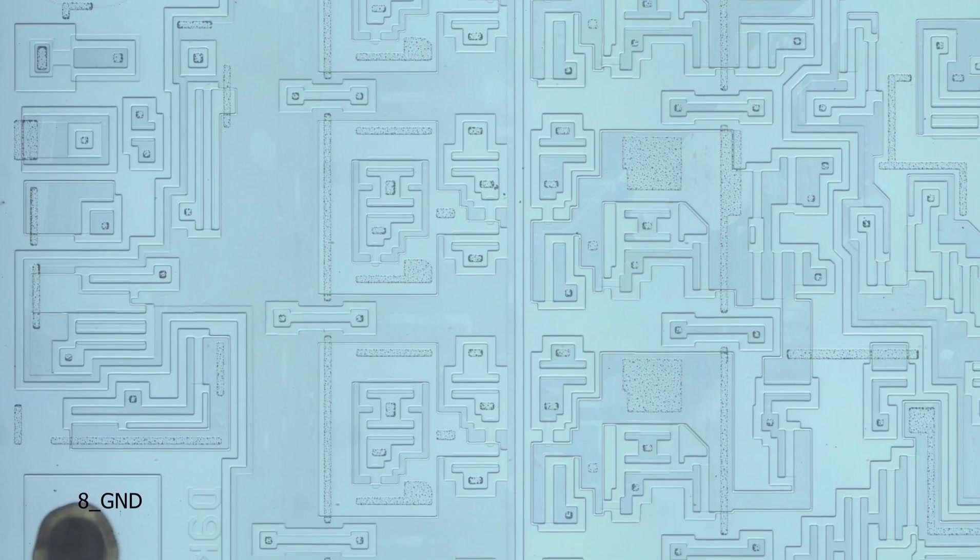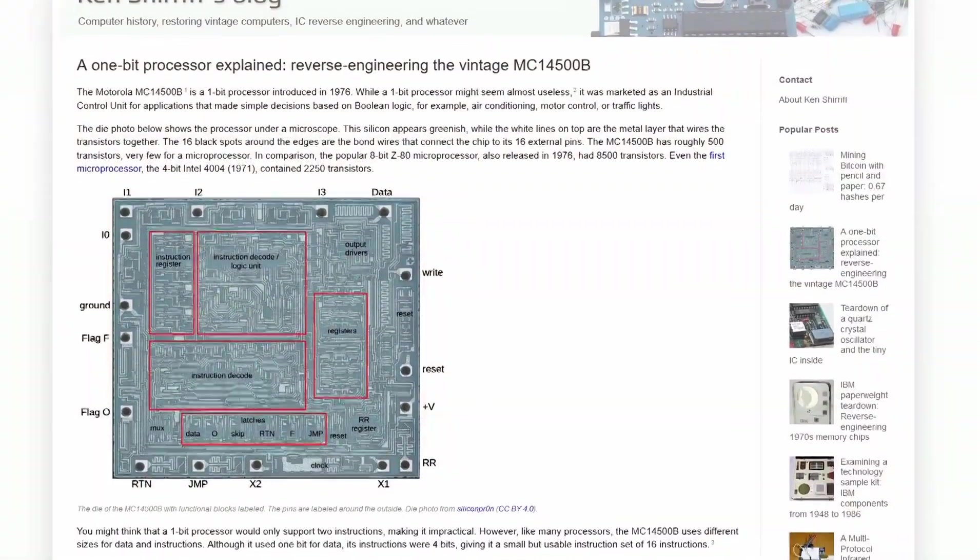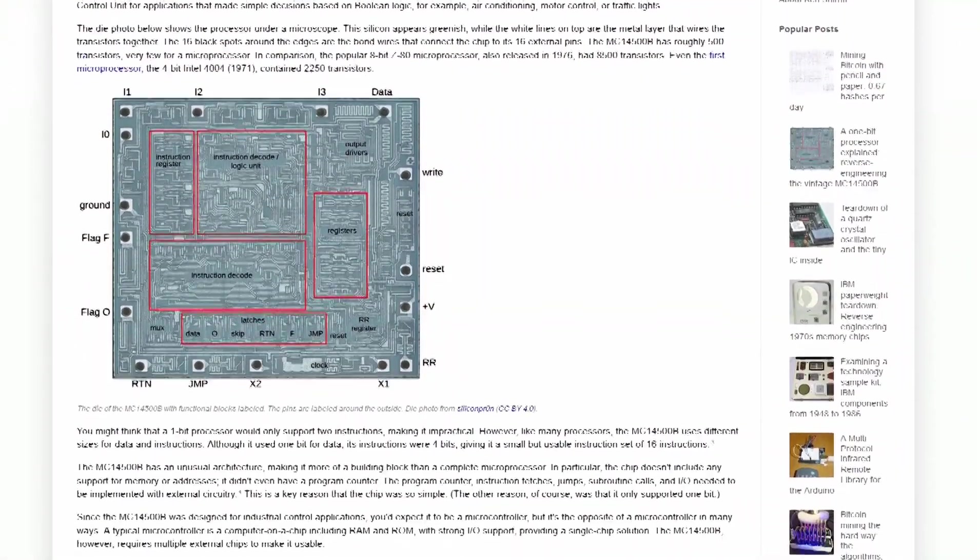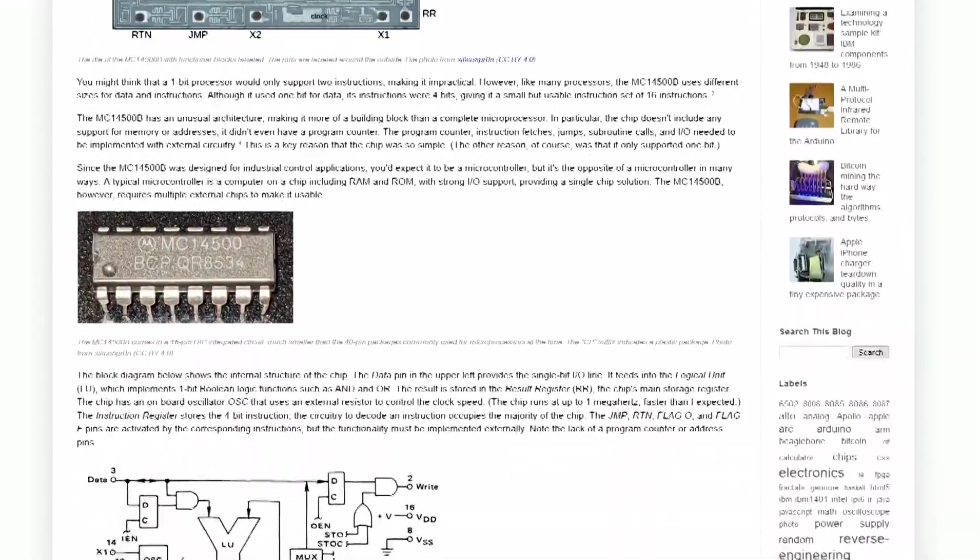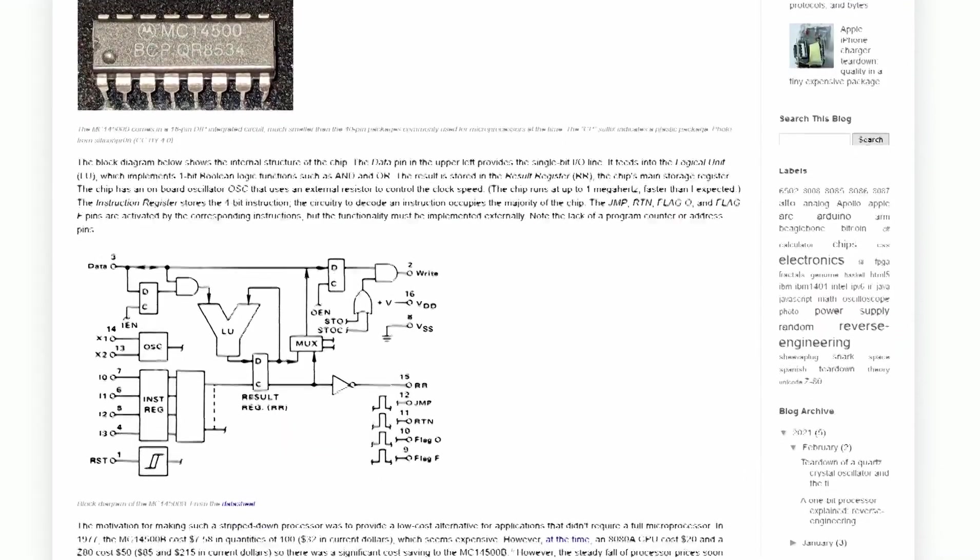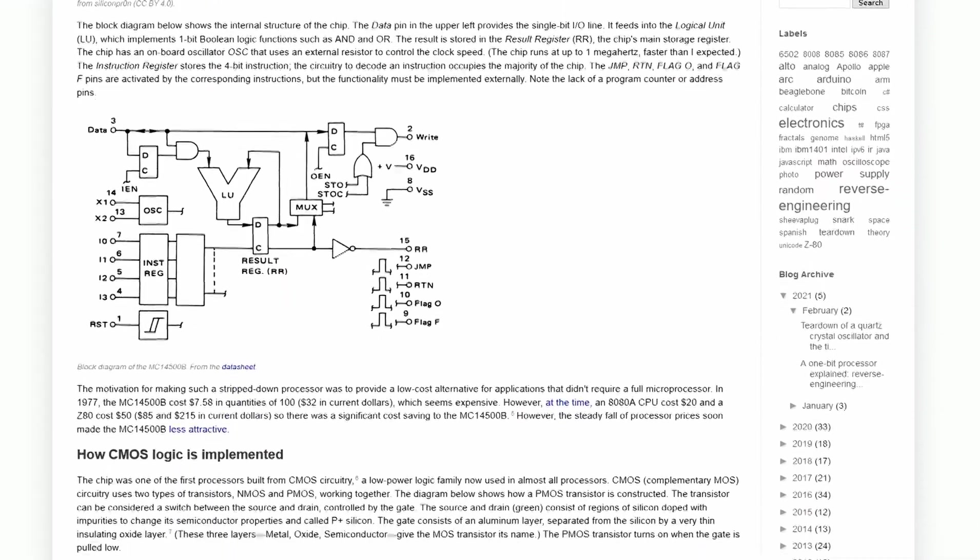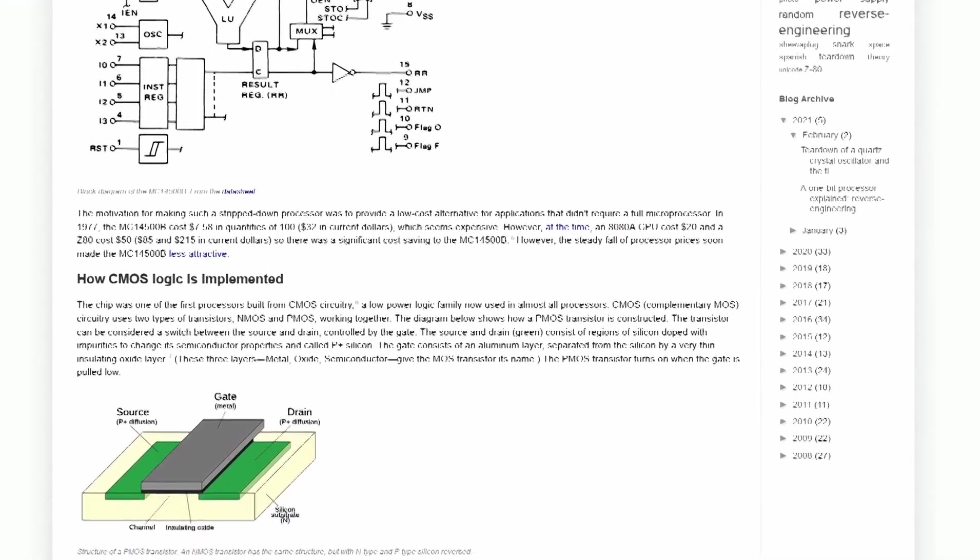But it means that we have some fantastic information. So let's hop into it. Let's take a look at these die shots and figure out what is what. Now, I'm not smart enough to have figured all of this out alone. As a matter of fact, Ken did 99% of the heavy lifting here, and he has made a fantastic blog post about this chip over on his website, which is righto.com. So definitely go there and read the blog post because you're going to get way more in-depth and detailed information than you'll ever get out of me.